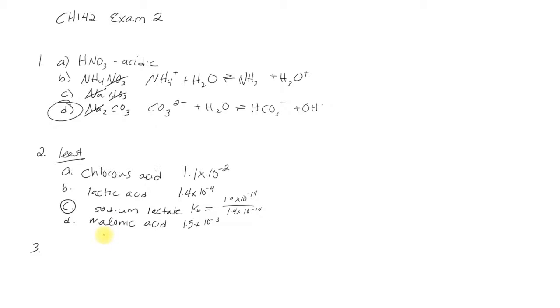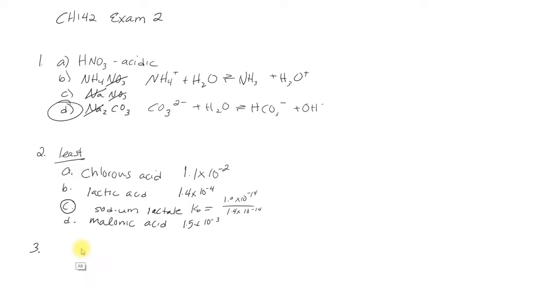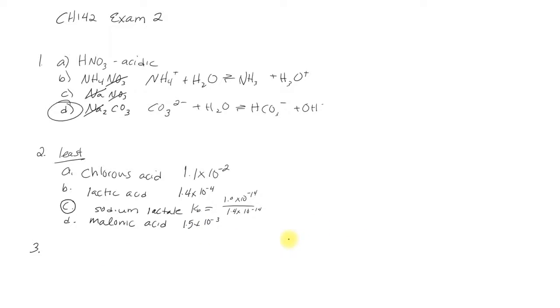Number three. What is the base dissociation constant of propionate, which is the conjugate of propionic acid? We're going to use this again. Propionic acid has a KA of 1.3 times 10 to the -5. It's asking for the conjugate. So I'm going to use KW divided by KA.